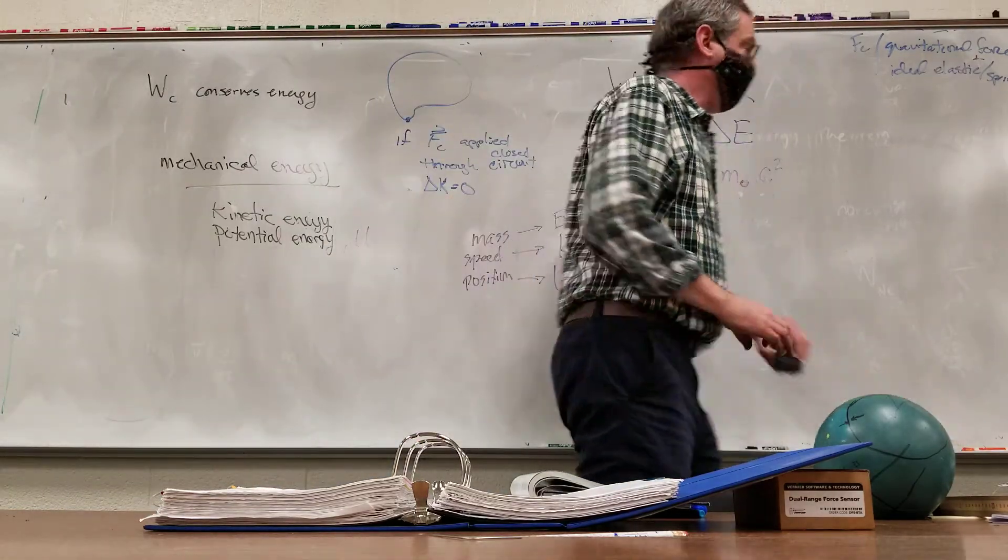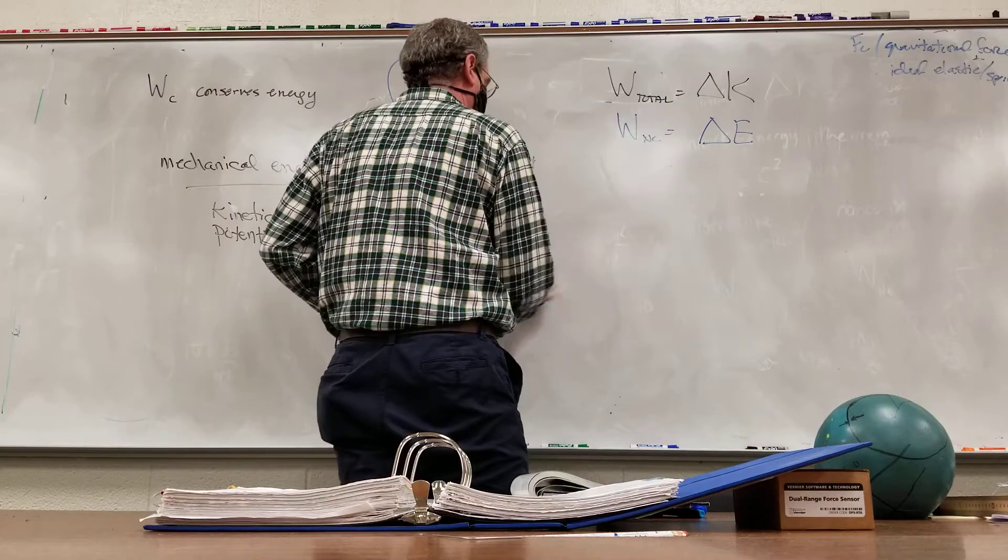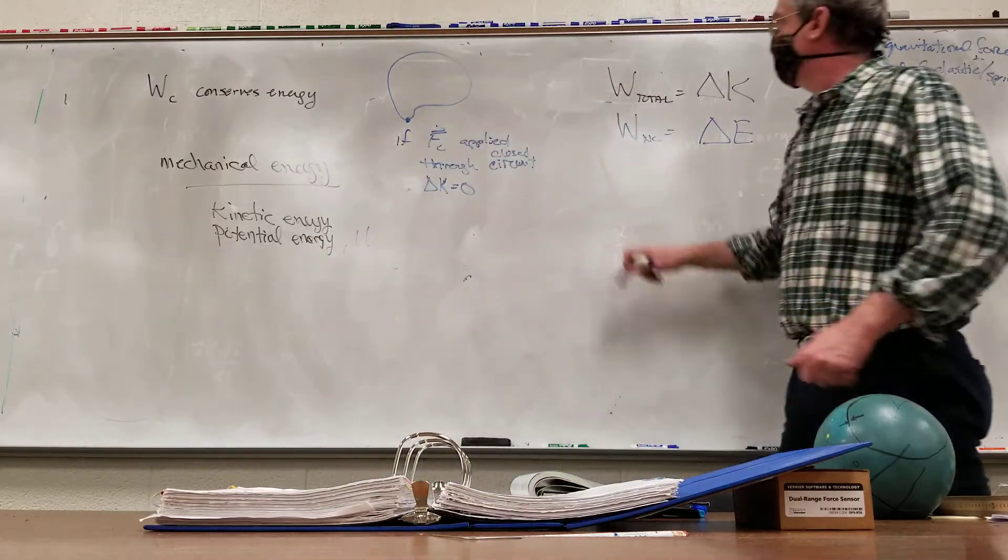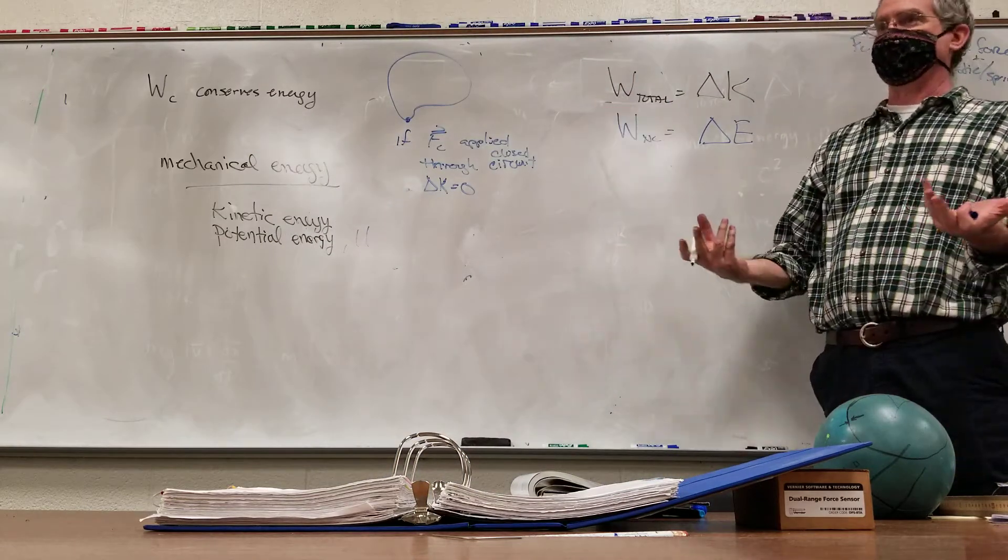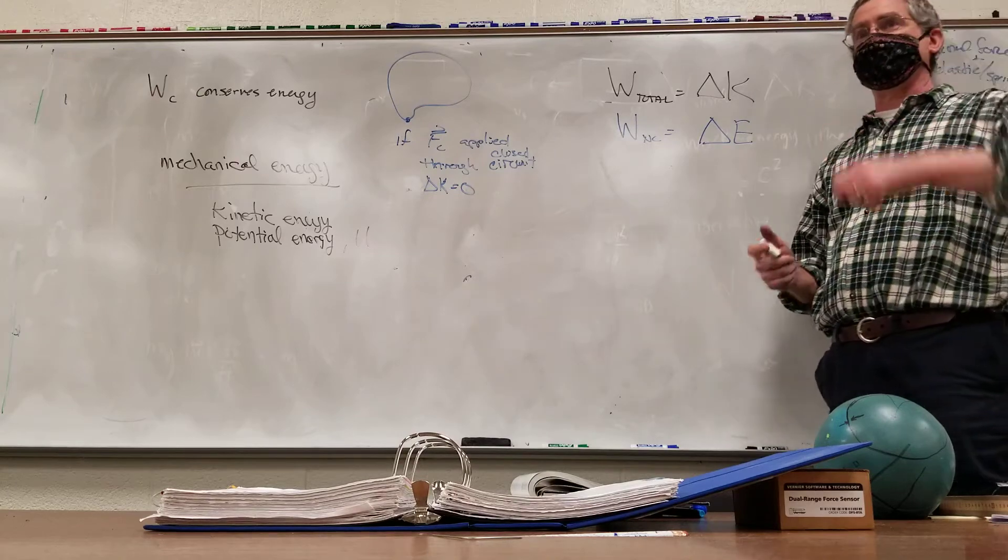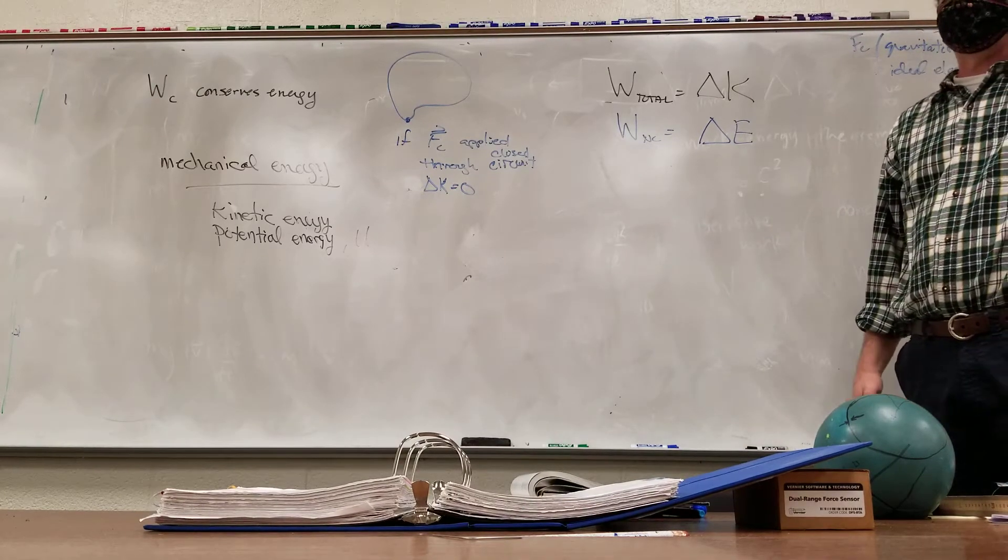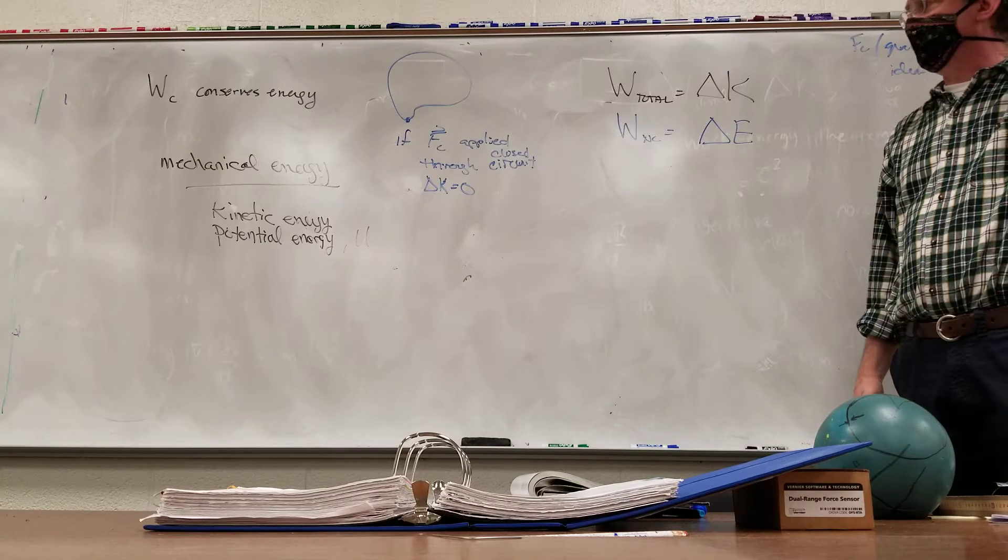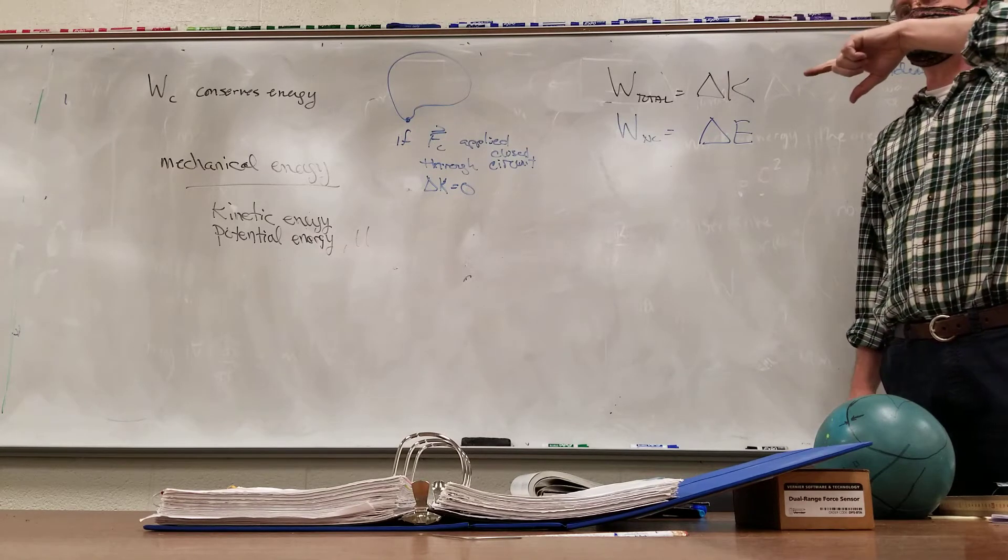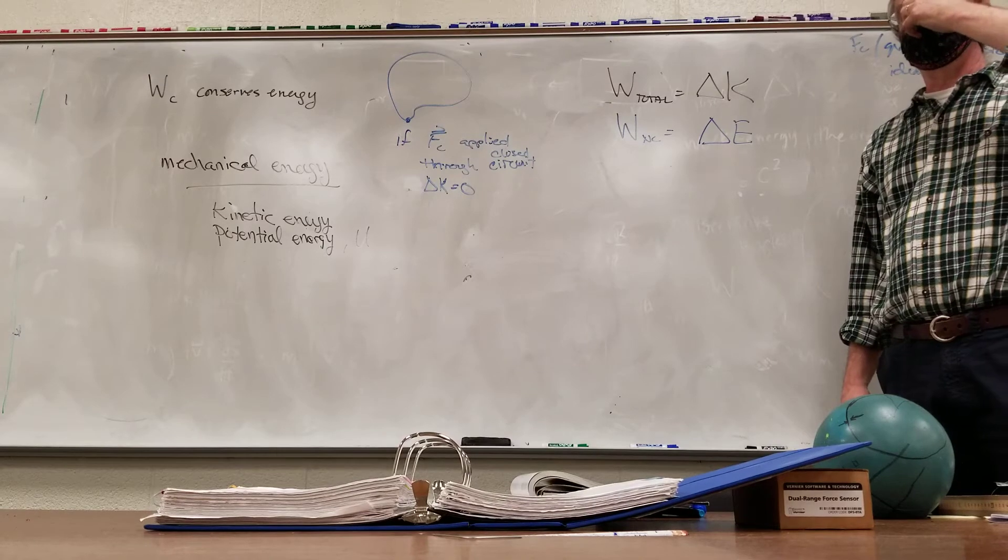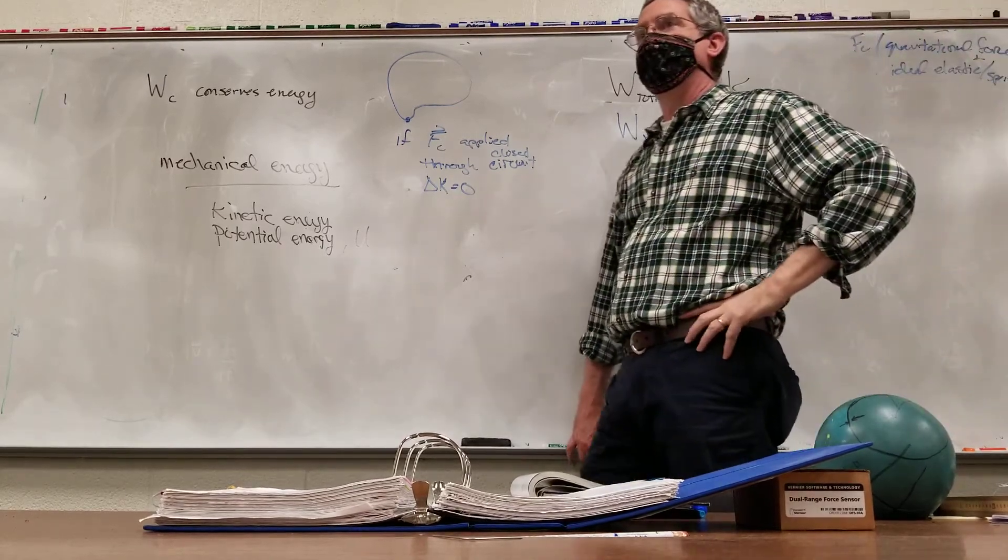And so now we can derive one more relationship here. Since total work is conservative work plus non-conservative work, because I have only two types. Oh, yes, Lawson. You erased it. It said, I believe, those positions. It's related to potential energy. Sorry, I cut you off. What is that? Is that a limit? That's a U.